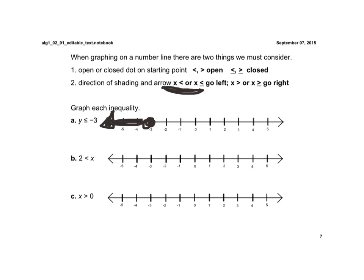Here, I would rewrite this as x. I don't like to upset the alligator, so the big mouth is open to the x. I'm going to rewrite it so it's open to the x. And now it's x is greater than 2. Well, it's an open circle, and it's greater than, so it goes to the right.